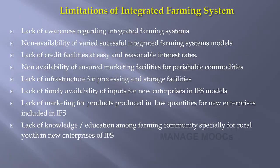Now we will see the limitations of integrated farming system. We have seen different advantages and the different types recommended, but why is it not so popular? The main limitation is lack of awareness regarding integrated farming system. People are not sufficiently aware. Moreover, there is non-availability of varied successful integrated farming system models. Though there are a few models recommended by ICAR and state agricultural universities, by and large there is a non-availability of very successful IFS models.